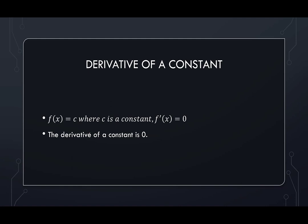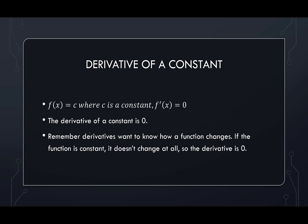Our first derivative rule is that the derivative of a constant is zero. So given f of x equals c, where c is a constant, f prime of x is equal to zero. Again, what we want to think in our heads is the derivative of a constant is zero. Let's think about what we're trying to do here. Derivatives want to know how a function is changing. If the function is constant, it doesn't change. So this is why we have a derivative that's zero.